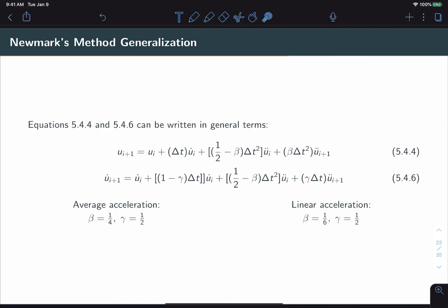In the case of average acceleration, which is the constant acceleration method, we would plug in beta equal to one fourth and gamma equal to one half. In the case of the linear acceleration assumption, we would plug in beta equal to one sixth and gamma equal to one half. I encourage you to go back to the original set of equations and see how this generalization actually works using these constants.